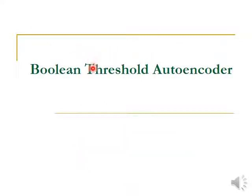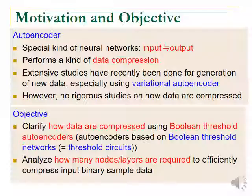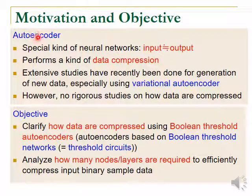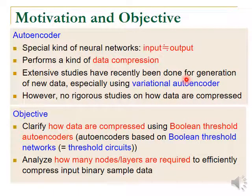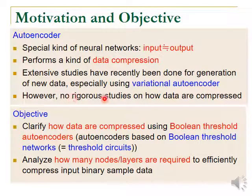First, I will define the considered mathematical model, Boolean-threshold autoencoder. Before talking about this model, I want to briefly mention the motivation and objective of this work. As you know, autoencoders are a special kind of neural networks in which input vectors should be the same as, or nearly equal to, the output vectors. These autoencoders form a kind of data compression. Extensive studies have recently been done for generation of novel data using these autoencoders, especially using variational autoencoders. However, no rigorous studies have been done on how data are compressed, so we started this work.